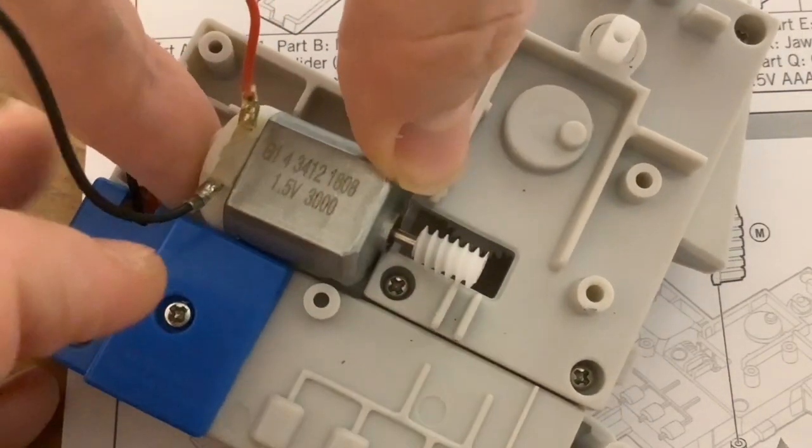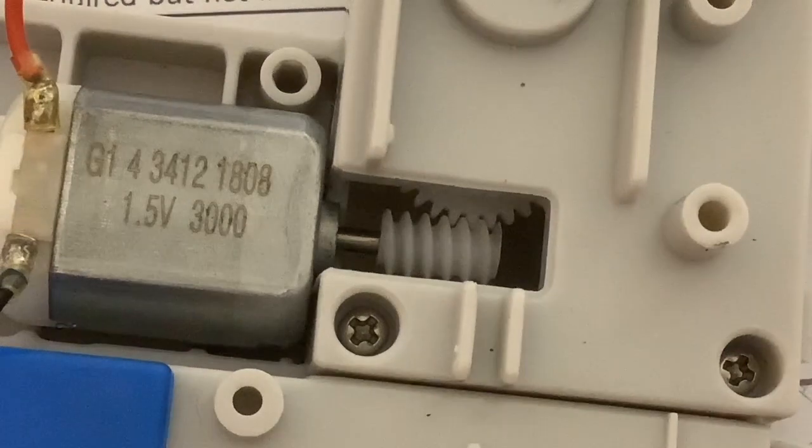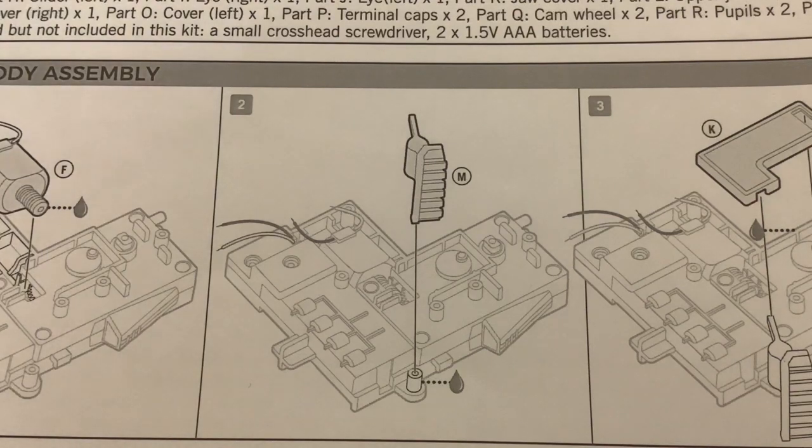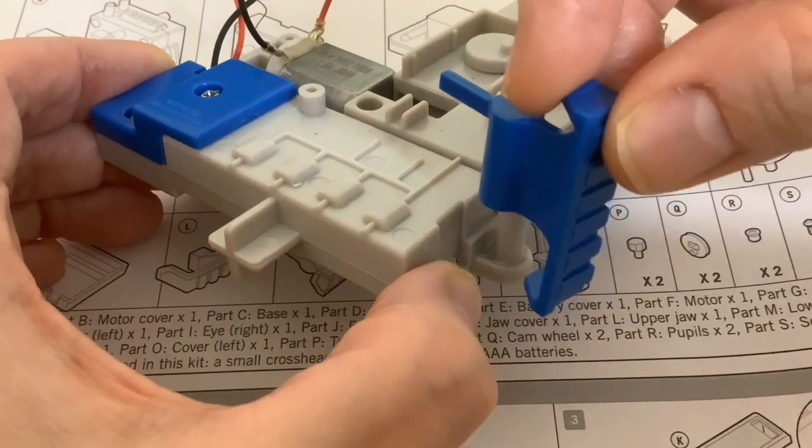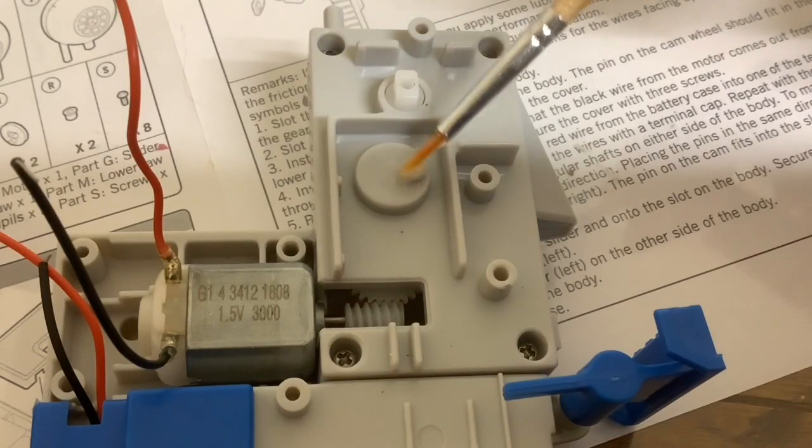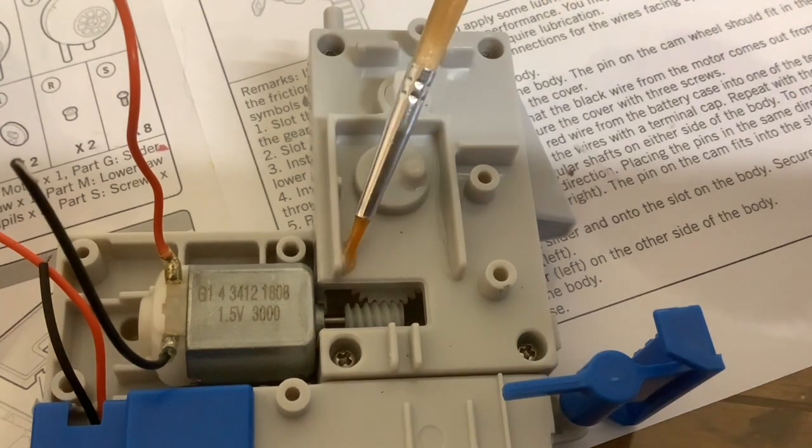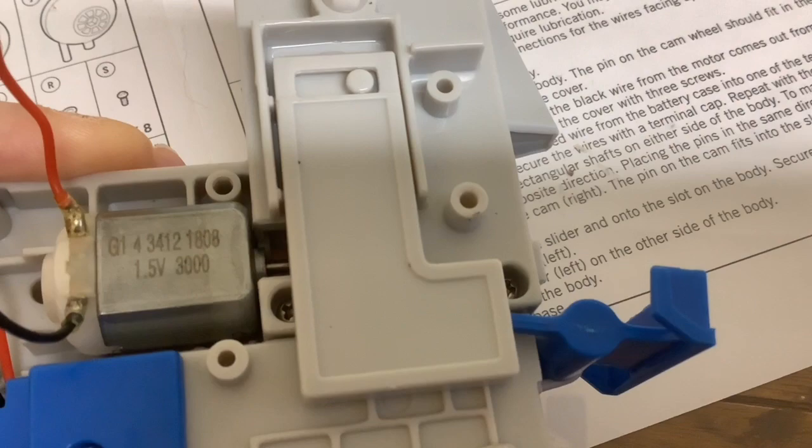I'm looking at the first part of assembly. In diagram one, we can see that we need to put some lubrication on the worm gear. Slot the motor into the body with the connections for the wires facing upwards. Check that the worm gear on the motor interlocks with the gear inside the body. In diagram two, we need to lubricate a part again. Slot the lower jaw onto its pin on the body. In diagram three, we need to lubricate three parts. Install the jaw cover into the side of the body. The pin on the cam wheel should fit in the upper slot on the cover and the arm on the lower jaw should fit into the lower slot on the cover.